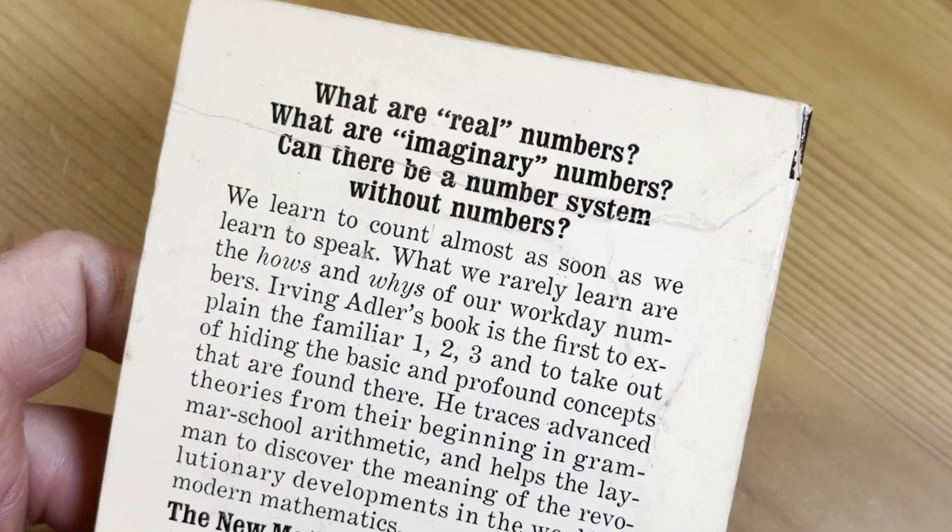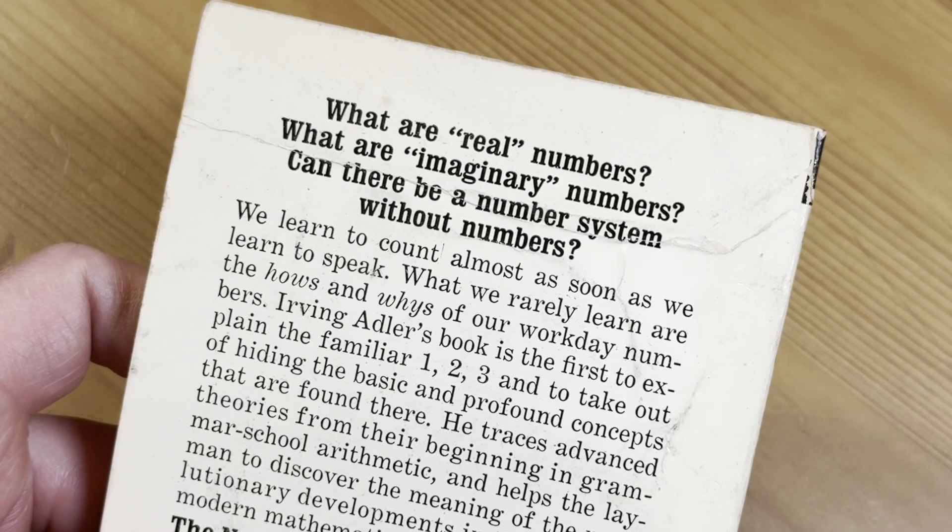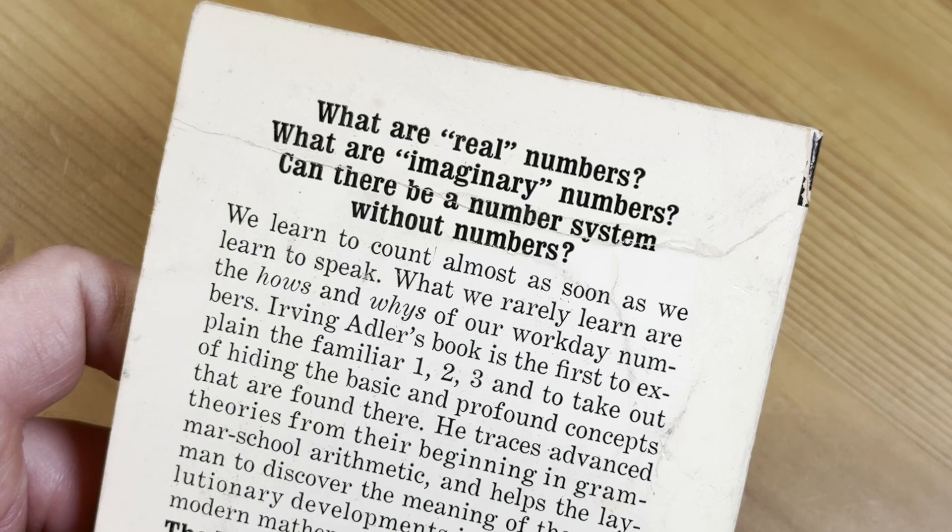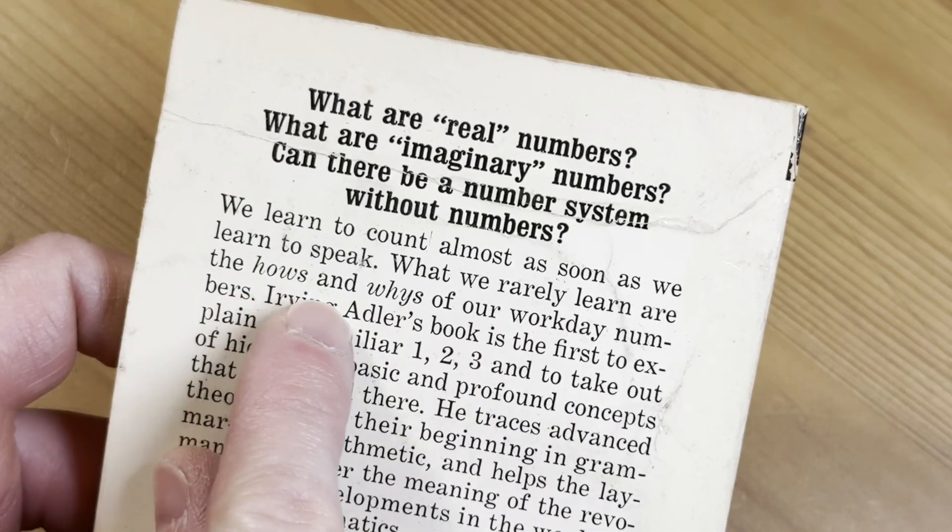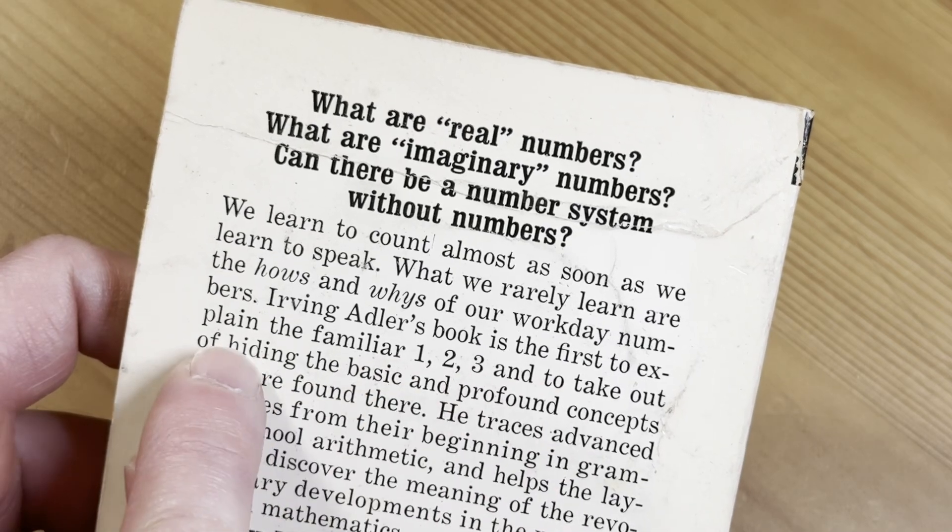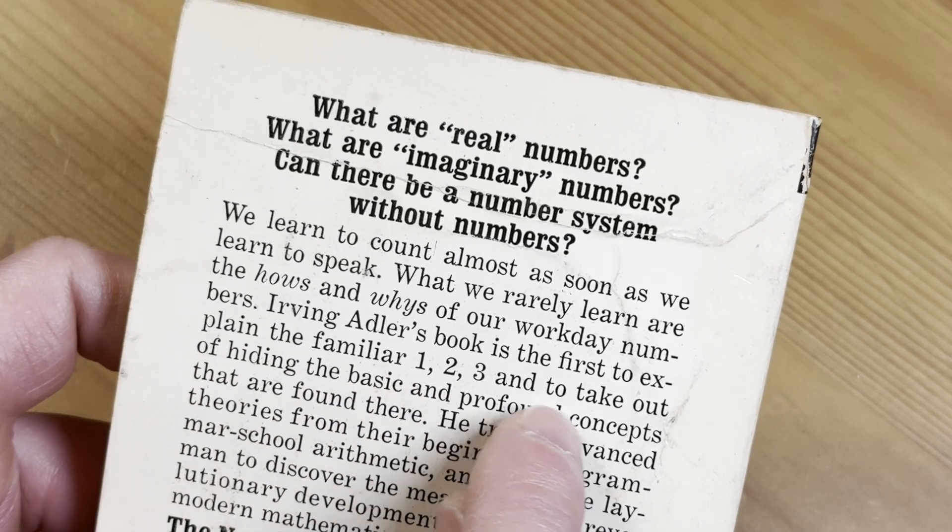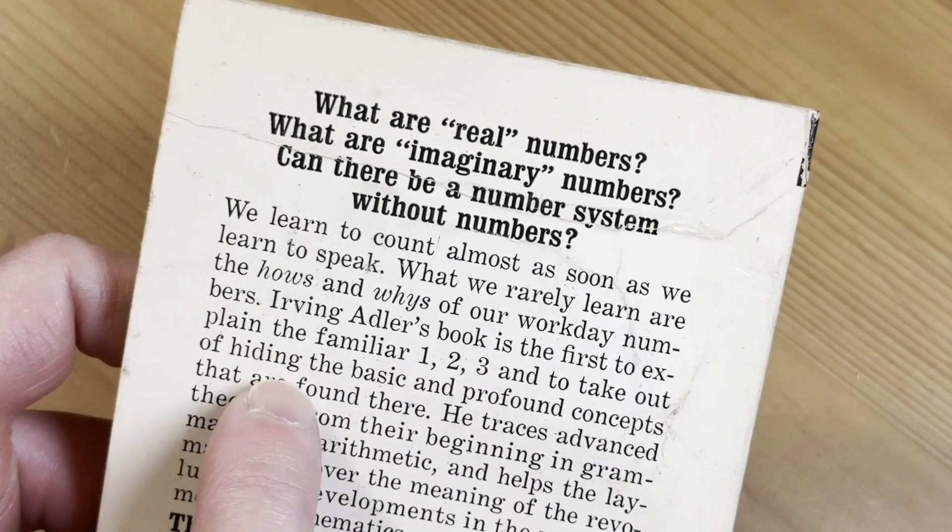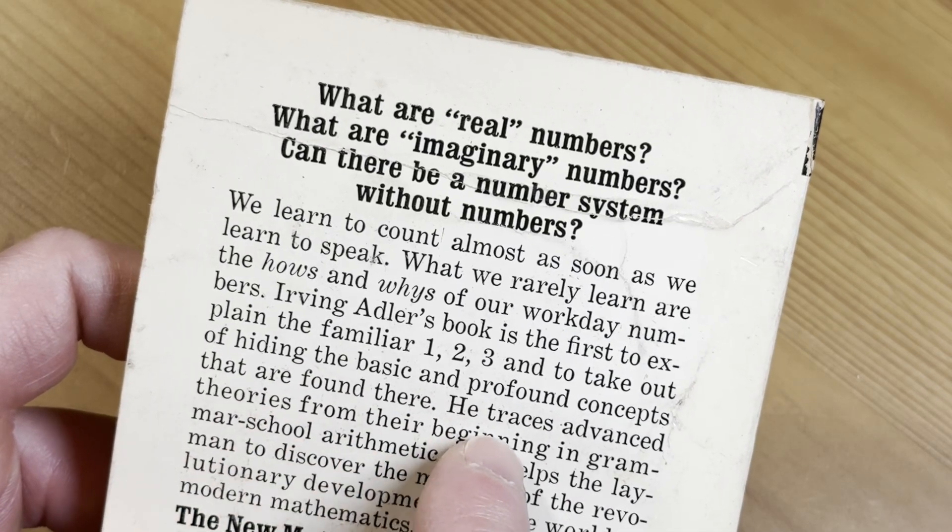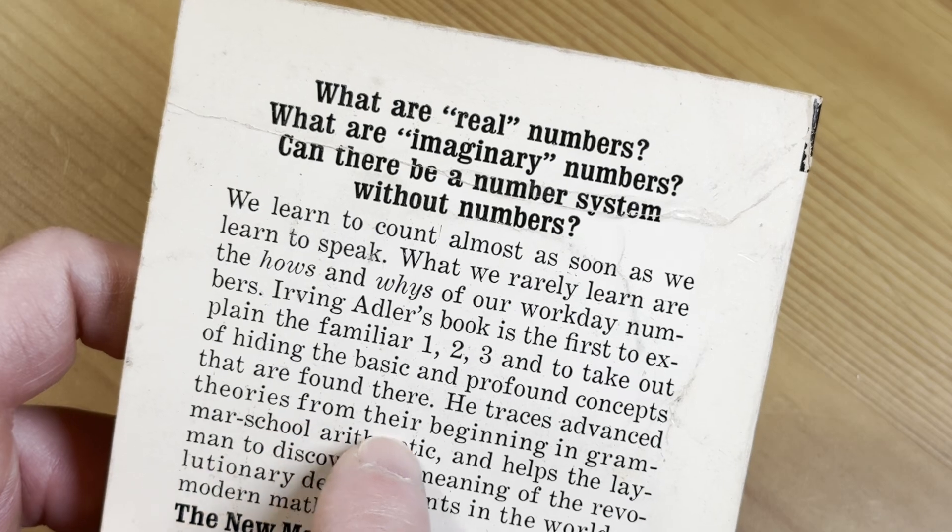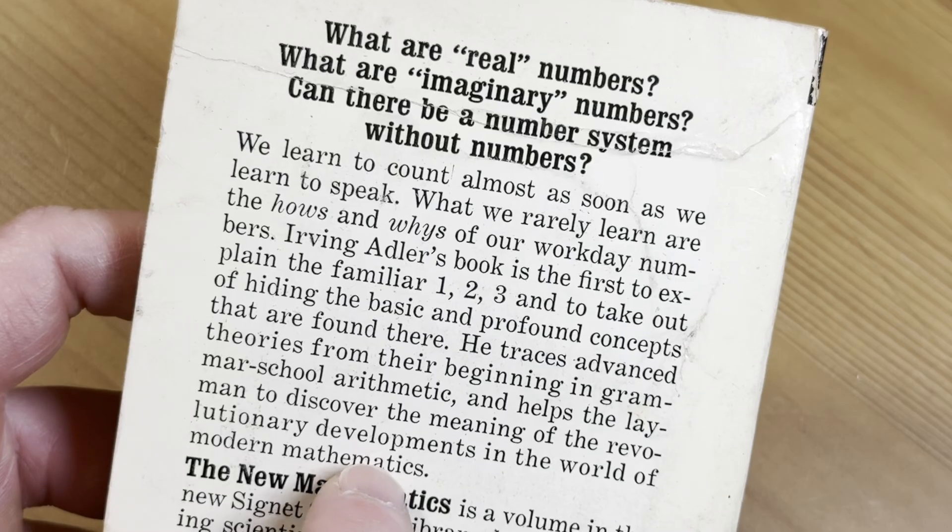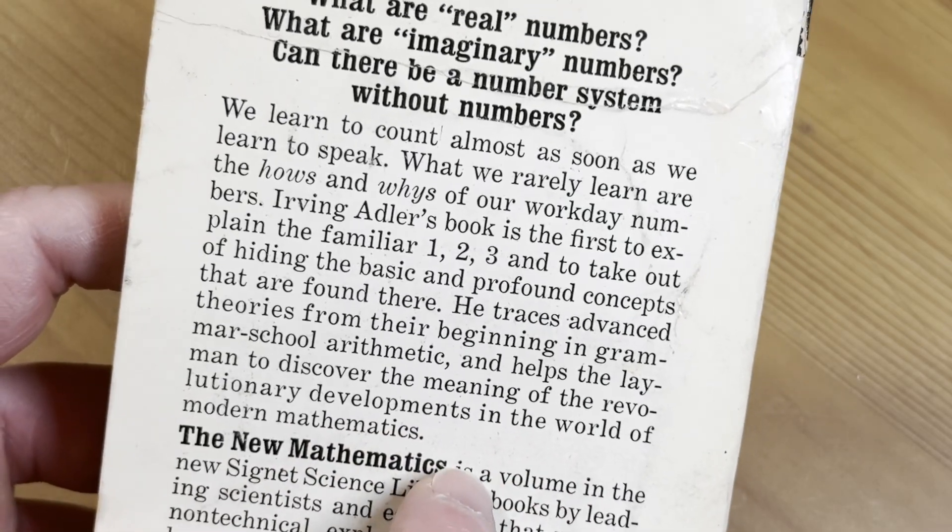What are real numbers? What are imaginary numbers? Can there be a number system without numbers? We learn to count almost as soon as we learn to speak. What we rarely learn are the hows and whys of our workday numbers. Irving Adler's book is the first to explain the familiar 1, 2, 3, and take out of hiding the basic and profound concepts that are found there. He traces advanced theories from their beginning in grammar school arithmetic and helps the layman to discover the meaning of the revolutionary developments in the world of modern mathematics.